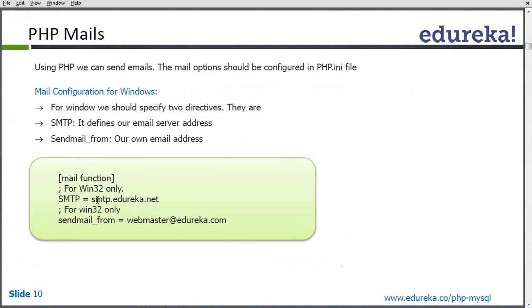We can change it to the SMTP server we are going to use to send emails, because emails are sent through a particular server. We should use our own server to send emails; otherwise the mail will not be recognized and will go to spam. To avoid that, we should provide an authorized SMTP server that will send the emails.